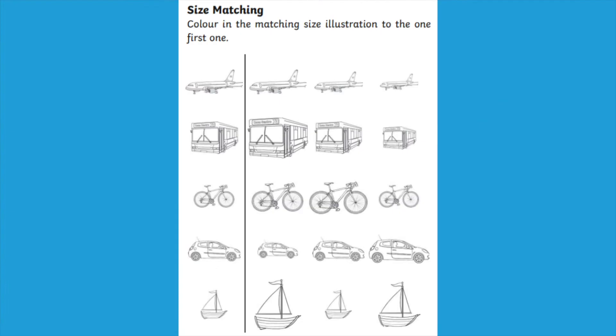For this matching activity your children have to find the correct size image to match the image before the line. This also provides a perfect opportunity for your children to practice size order. Can they order the modes of transport from smallest to largest or largest to smallest?